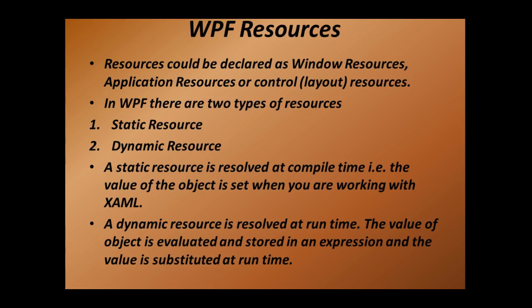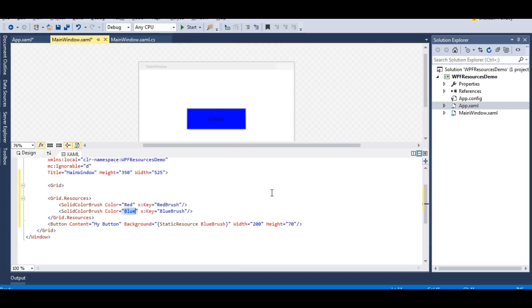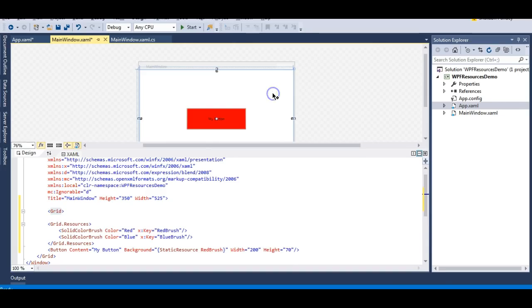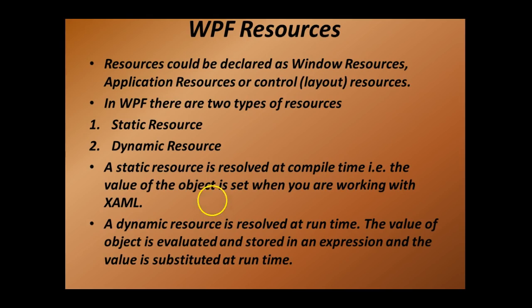In WPF there are two types of resources: StaticResource and DynamicResource. A static resource is resolved at compile time - the value is set when working with XAML. I changed it to 'red brush' and my button changed to red at compile time without running the application. A dynamic resource is resolved at runtime - the value is evaluated and stored in an expression and substituted at runtime. The value is evaluated at compile time but substituted at runtime.